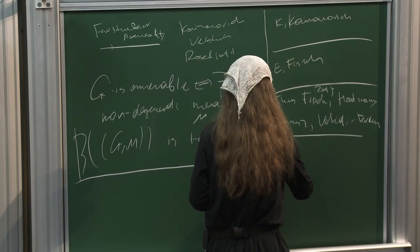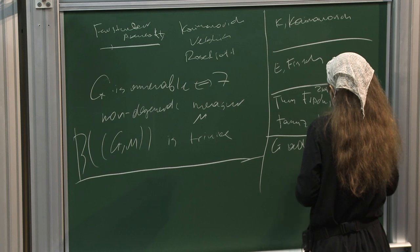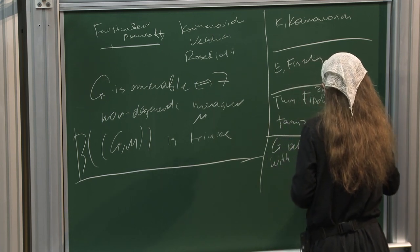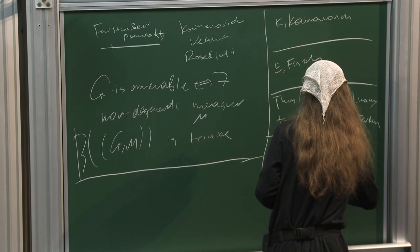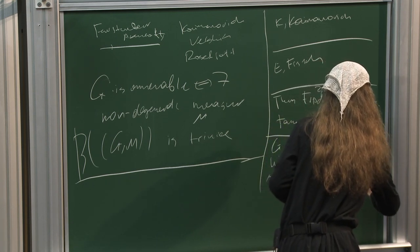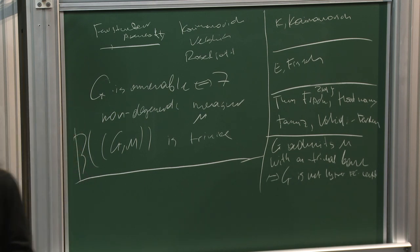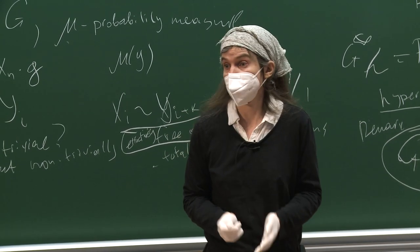The theorem says that a countable group G admits a mu with non-trivial boundary if and only if G is not hyper-FC central. Without going into details, for a finitely generated group the only hyper-FC central groups are exactly the virtually nilpotent groups. So the theorem says: for finitely generated groups, the group admits a measure with non-trivial boundary if and only if it is not virtually nilpotent.